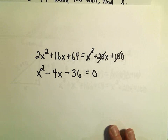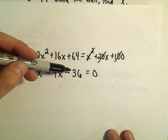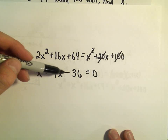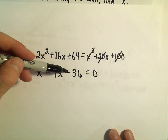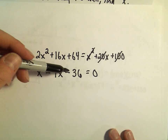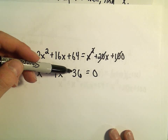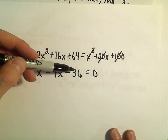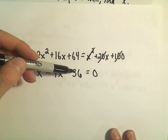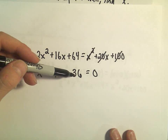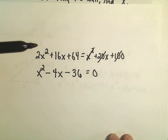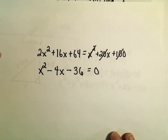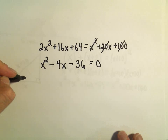Now the right side is equal to zero. I start thinking about factors of 36 — two numbers that multiply to negative 36 but add up to negative 4. Let's try: 1 and 36, that's not going to work; 2 and 18, that doesn't work; 3 and 13, that doesn't work; 4 and 9, that's pretty close but doesn't work; 6 and 6, I don't think so. Everything is just repeating itself, so it looks like I'm going to have to use the quadratic formula.